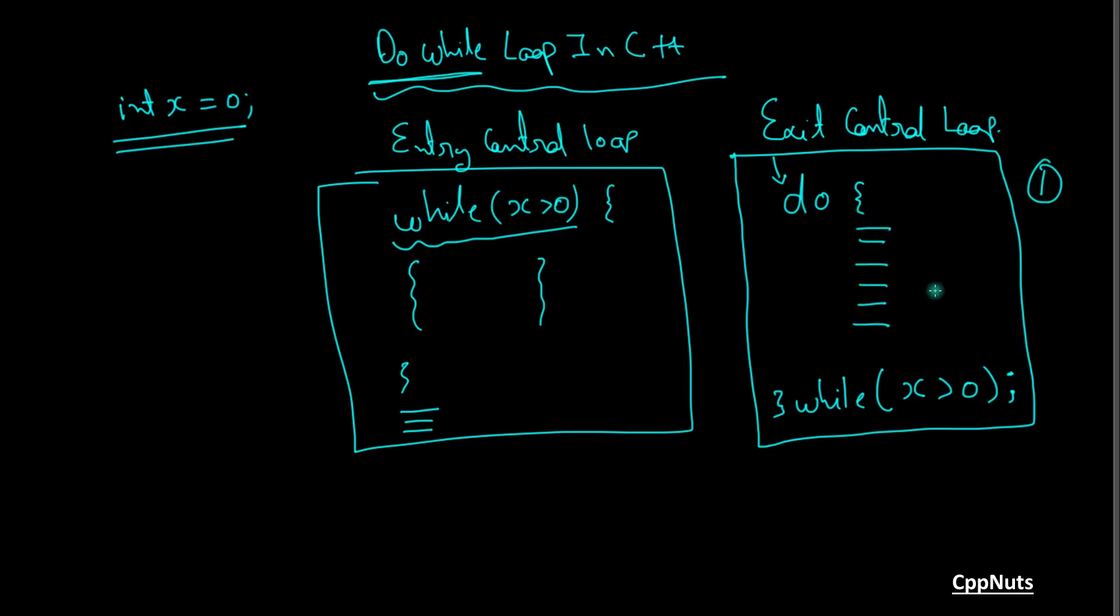And after executing everything for one time, we will check is x is greater than 0. If that condition holds, we will go back and we will do all those things again and we will check this again.